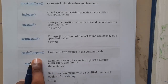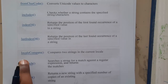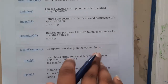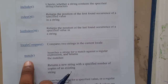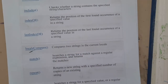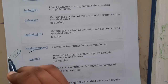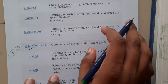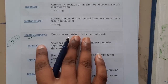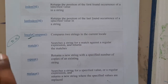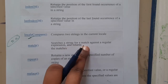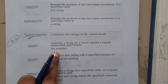`localeCompare` compares two strings in the current locale. Whenever you are working with strings, use this kind of function — don't use double equals (`==`) because that can sometimes give wrong results, even saying two identical strings are not the same. You can also use `match`, which searches the string for a match against a regular expression and returns the matches.